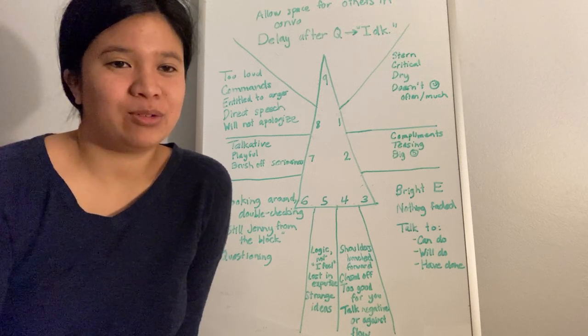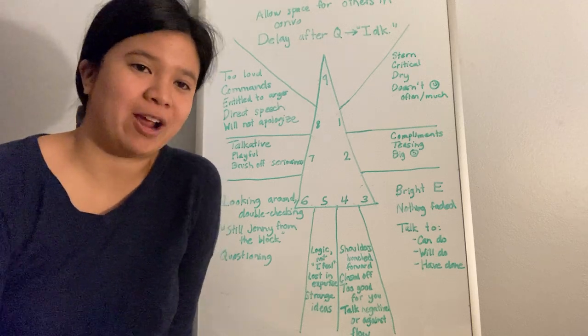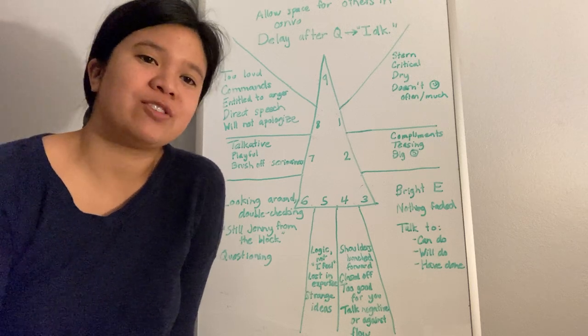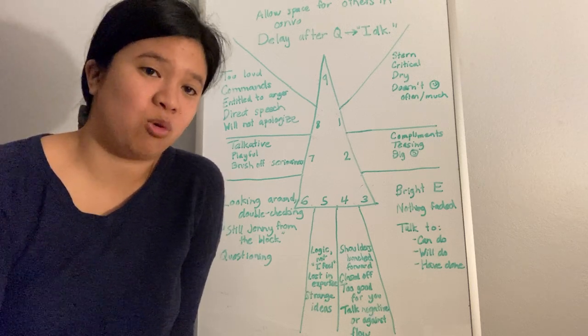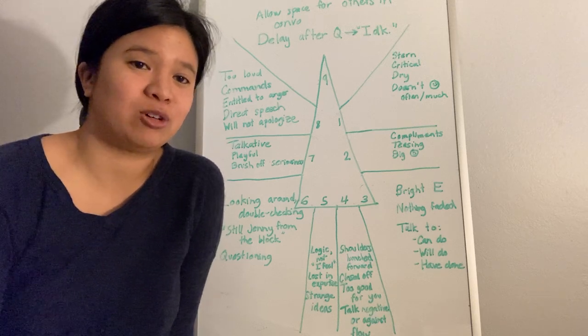I'm here to share with you an interesting topic that I came across on Enneagrammer, and it's the visual and conversational signals that will help you identify your core type, and maybe even your wing, and the types in your tri-type.